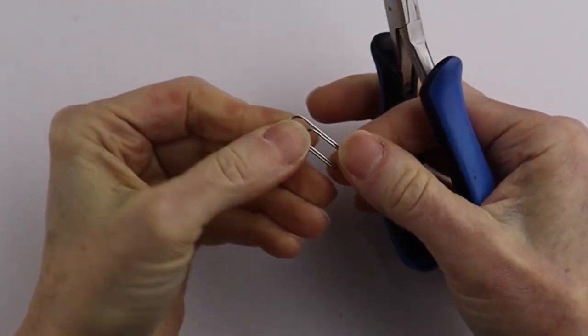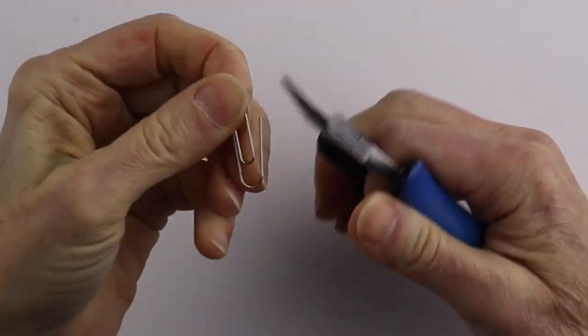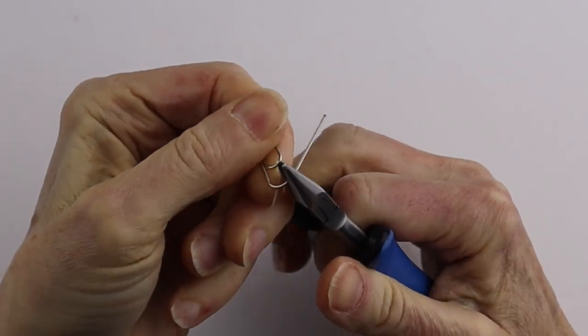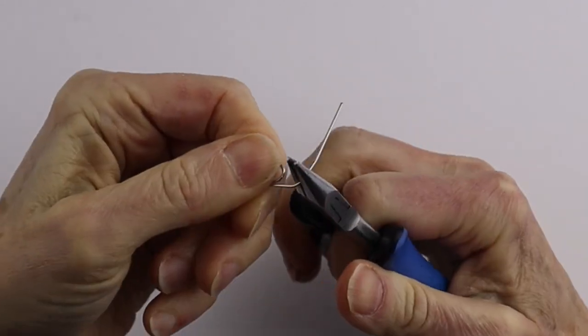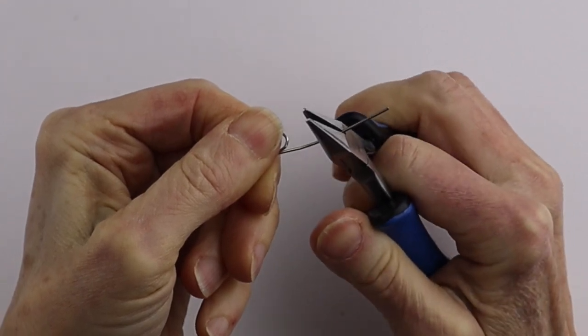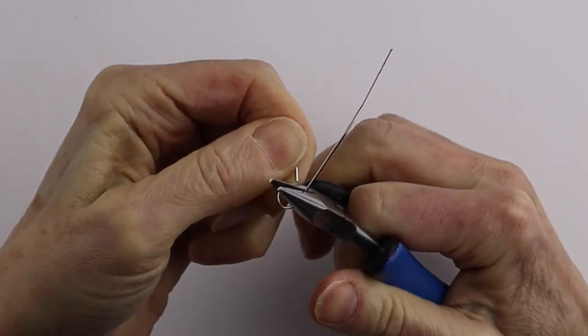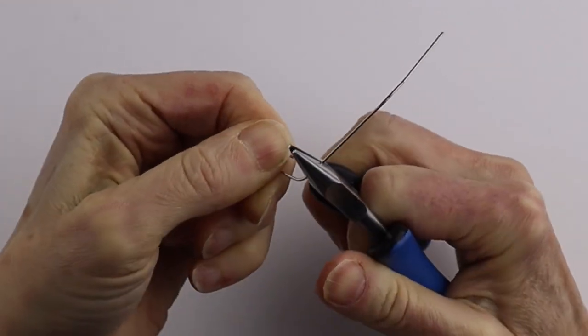The first thing you're going to do is just take your paper clip and open it up. I find the best way is to get my flat pliers and just slowly open it up like that so you don't get any kinks in the wire.